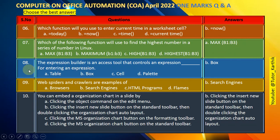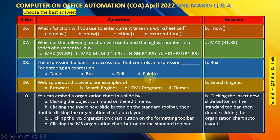Question number 8: The expression builder is an Access tool that controls an expression — blank — for entering an expression. Options: A. Table, B. Box, C. Cell, D. Quality. The right answer is B — box.